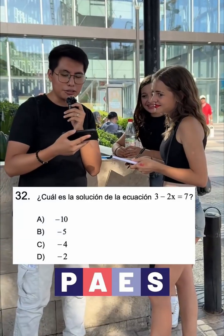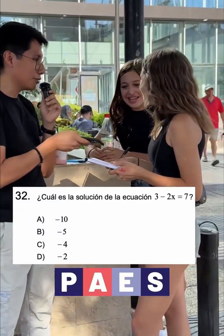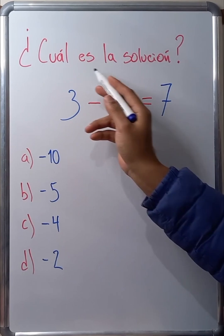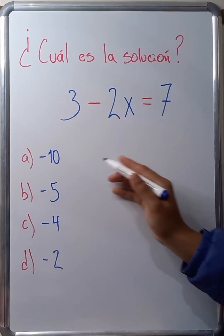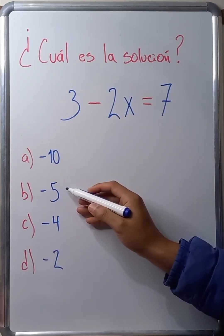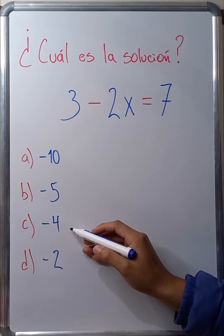What is the solution to 3 minus 2x equals 7? What is the solution to this equation? Part A minus 10, part B minus 5, part C minus 4, or part D minus 2?